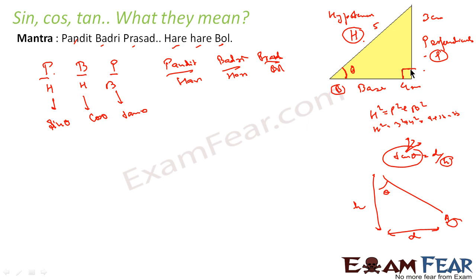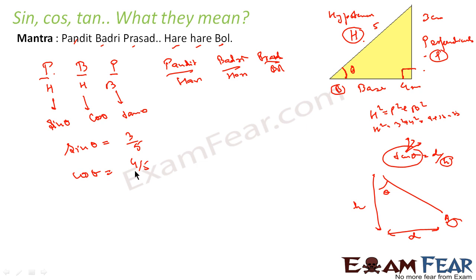In this example, perpendicular = 3, base = 4, hypotenuse = 5. So sine theta = P/H = 3/5. Cos theta = B/H = 4/5. And tan theta = P/B = 3/4. This is the relation we get in this example.